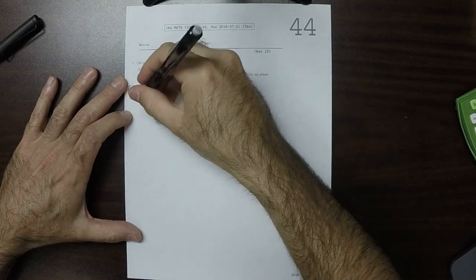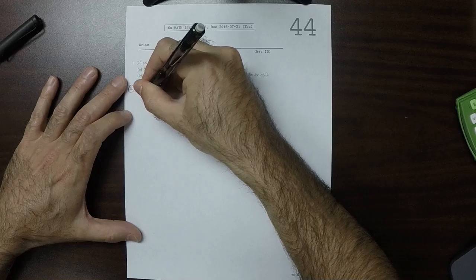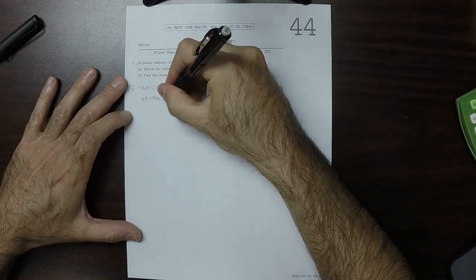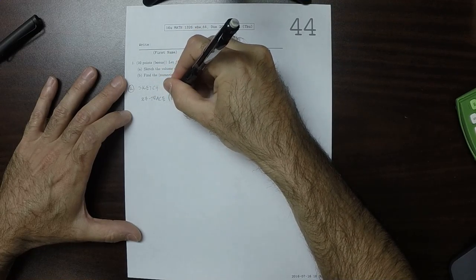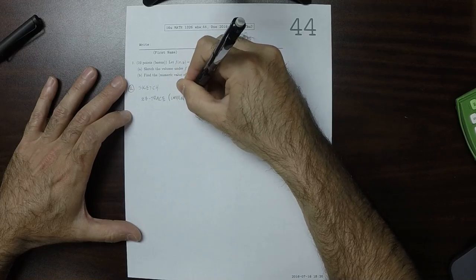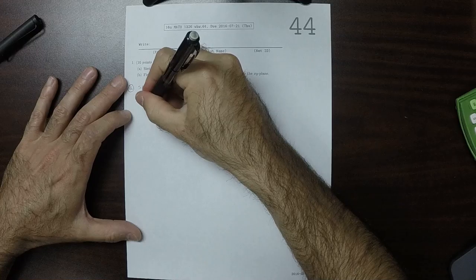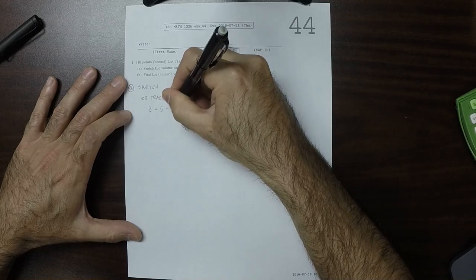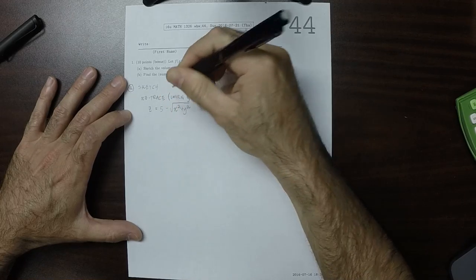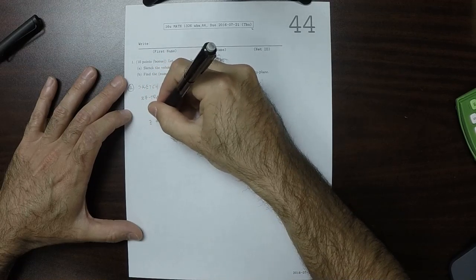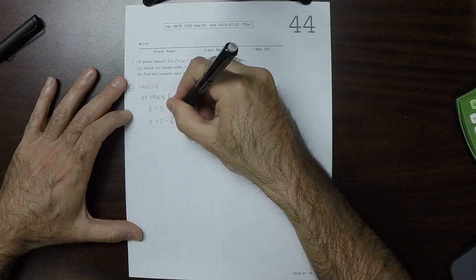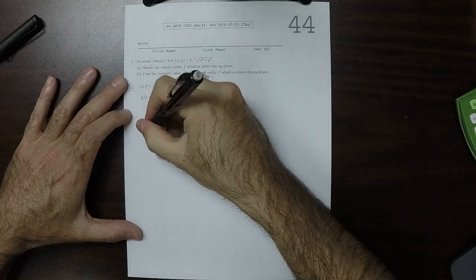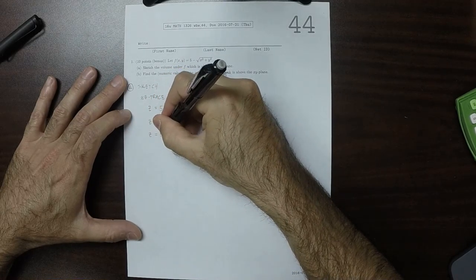the first thing is let's make some traces. How about the xz trace of this function? The xz trace, that is when y is 0. So if we take z is 5 minus square root of x squared plus y squared, and we take y to be 0, then that's z is 5 minus square root of x squared. And the square root of x squared is absolute value of x.